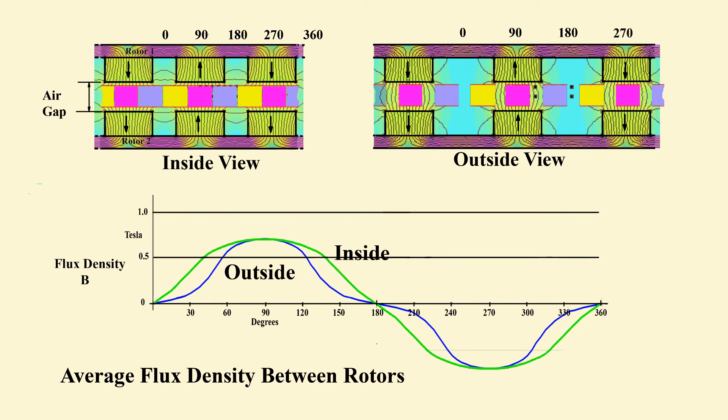Averages of flux density may be plotted against rotor displacement. Both curves are smooth with mainly third harmonic distortion, heaviest for the outside view. What about when the machine is loaded? Briefly, since the magnetic circuit is effectively all rare earth, distortion of the flux pattern is negligible, even at very high load current.